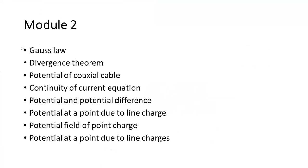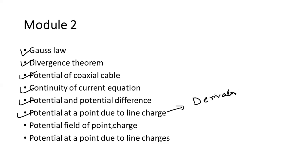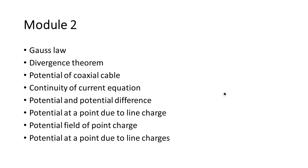First and foremost, it is always advisable to refer to Gauss's law — the statement and the mathematical equation. Then Gauss's divergence theorem is also very important. Then the potential of a coaxial cable — how to calculate the potential of a coaxial cable — then the continuity of current equation, potential and potential difference, potential at a point due to line charges as a derivation, and the potential field of a point charge as part of a derivation, along with numerical examples.